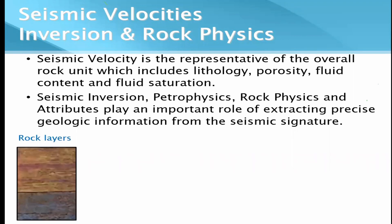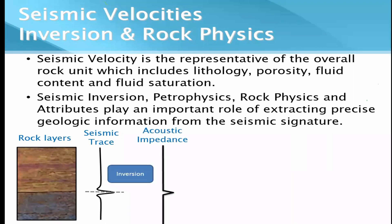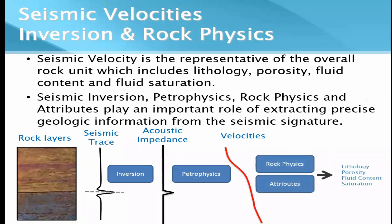From seismic inversion and related tools we can extract precise information to obtain rock properties, but we must be careful about which tools to use to extract specific information. We have rock layers, from whose interfaces we get a seismic trace. When we do inversion we get the acoustic impedance; comparing it with petrophysical properties and using rock physics and attribute tools, we can interpret lithology, porosity, fluid content, and so on. This is the overall workflow for resolving problems through quantitative interpretation.